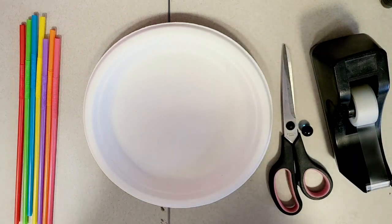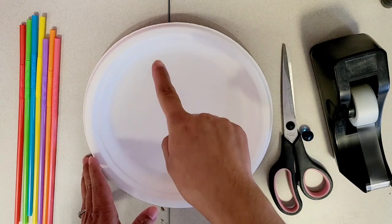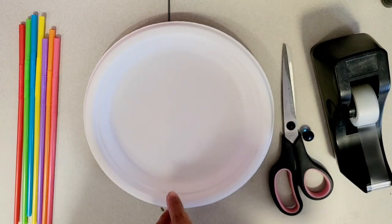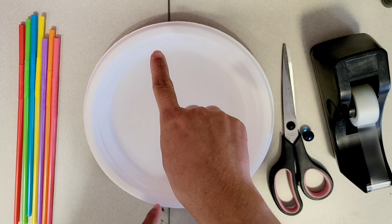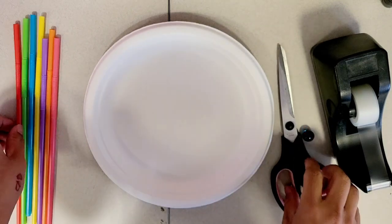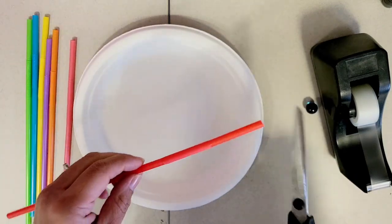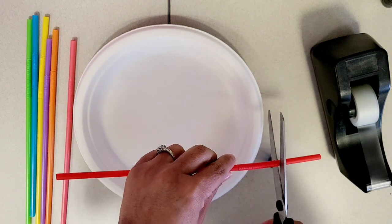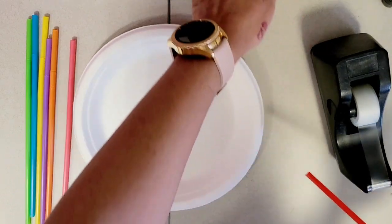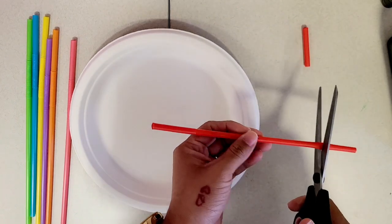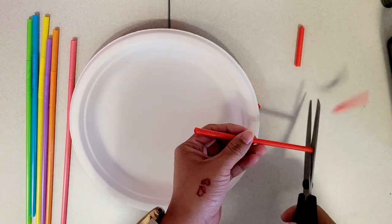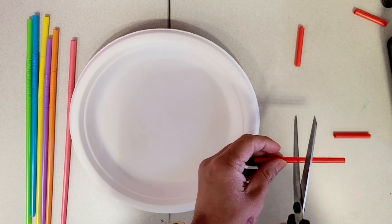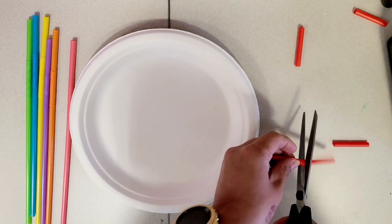So the first thing we want to do is construct the pathway where we want the marble to go, the starting point and where we want it to end. So we're going to do that by cutting up our straws because we'll be using them as the walls of our maze. So we want to cut up all our straws because those will be the pieces that we use.